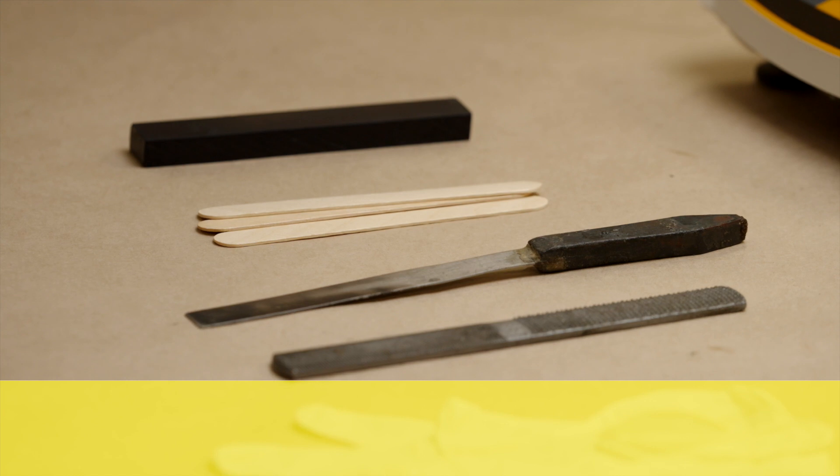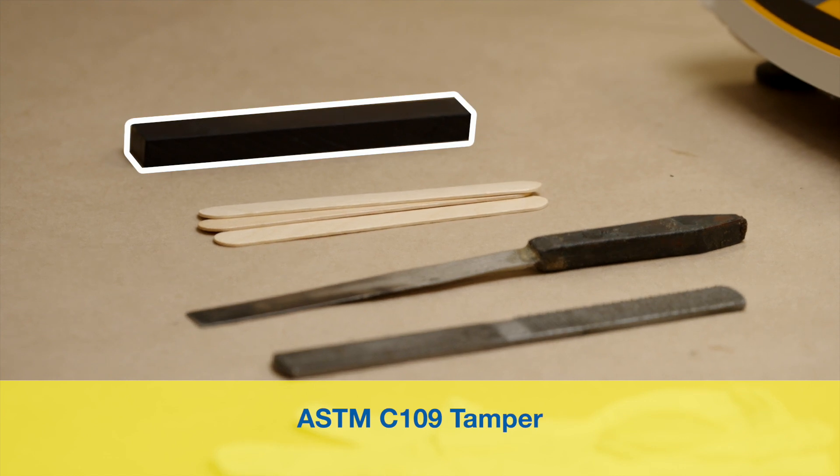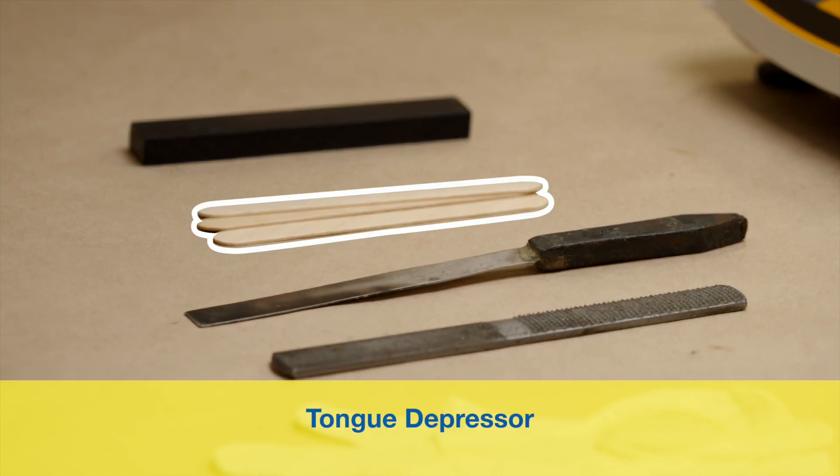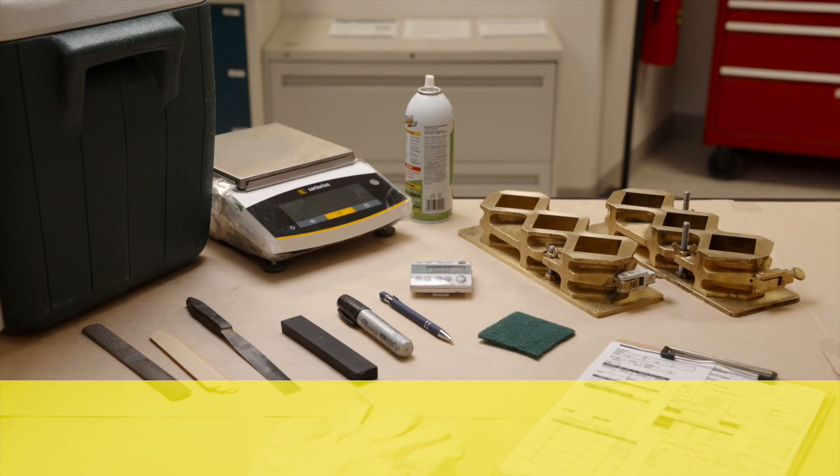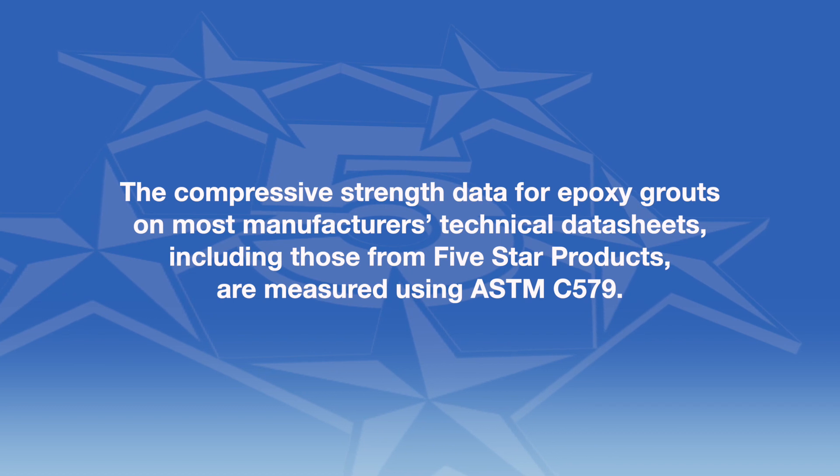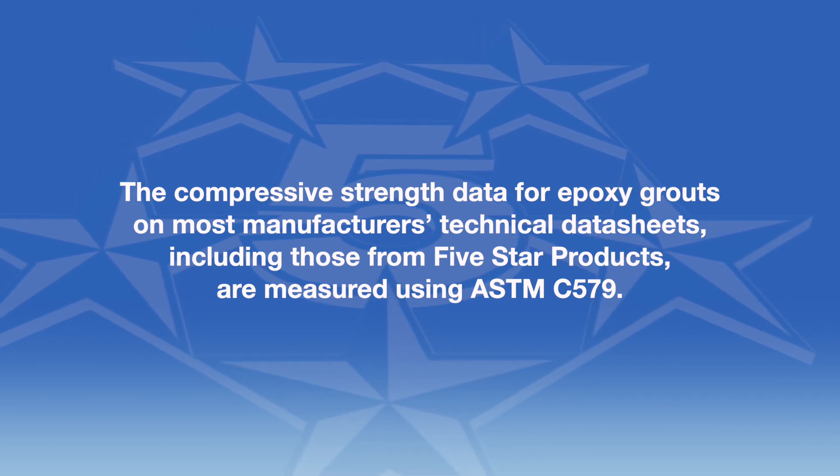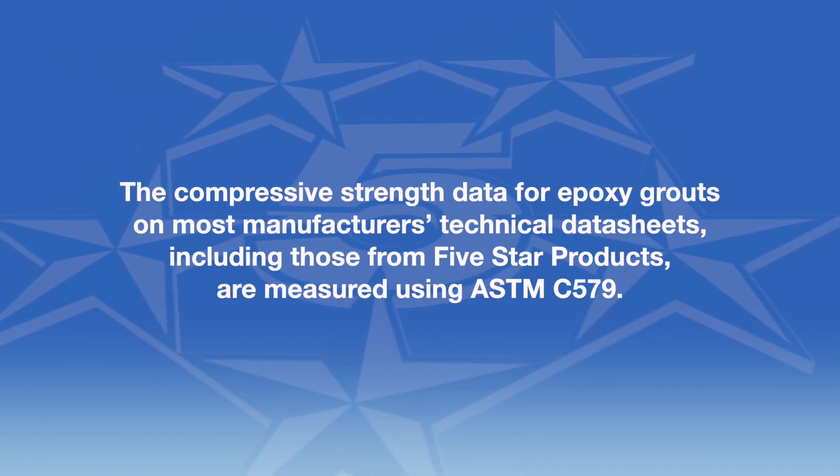Additional requirements include an ASTM C109 tamper. If unavailable, you may use a tongue depressor or spatula. You will also need a file, scale, scouring pad, permanent marker, thermometer, and record book. The compressive strength data for epoxy grouts on most manufacturers' technical data sheets, including those from 5-star products, are measured using ASTM C579.